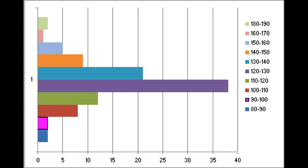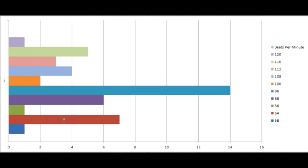I'll just play the beat. The most common BPMs I found in the rock songs were 96, 64, 88, and 116.